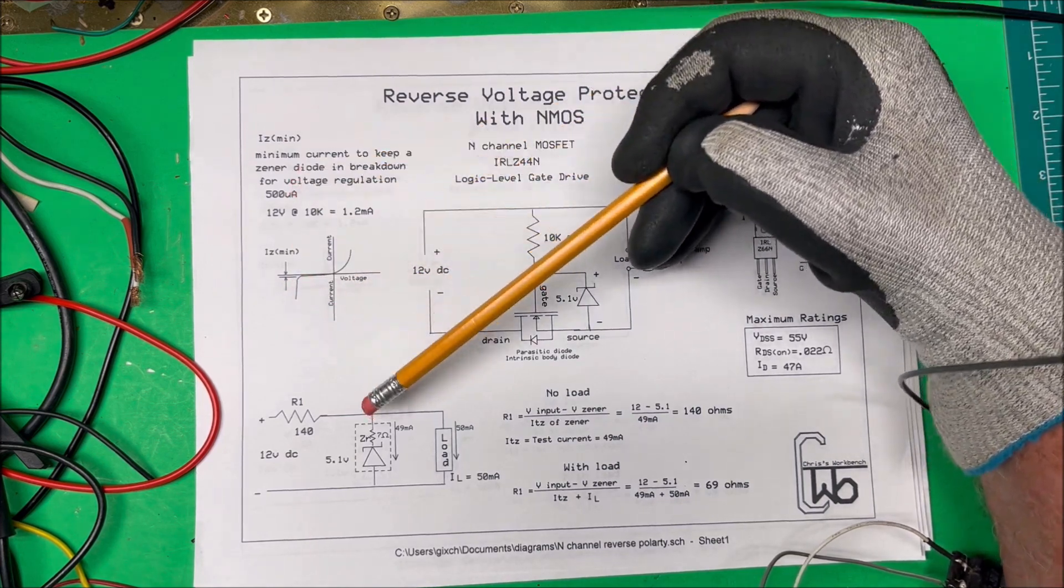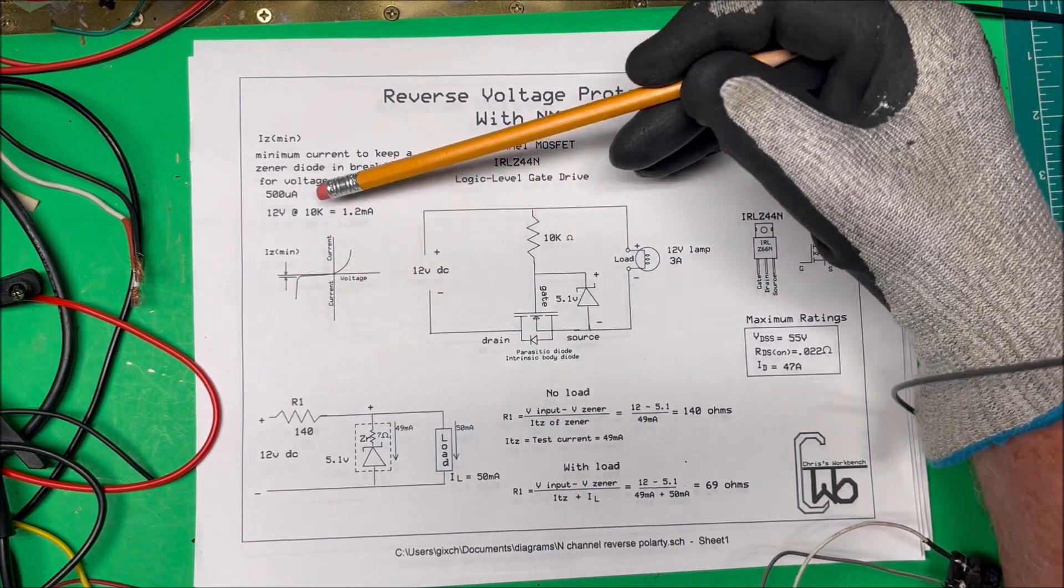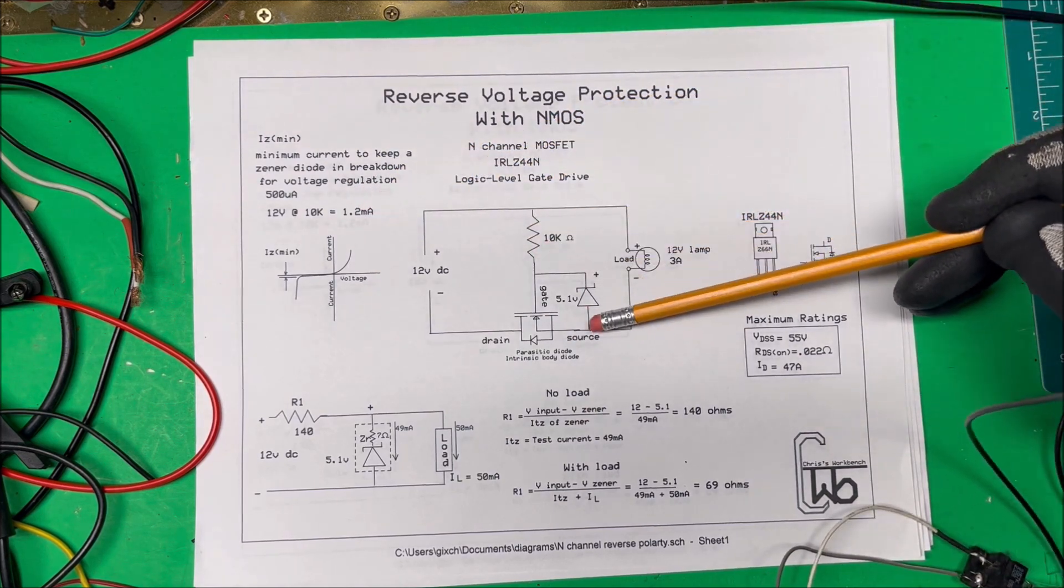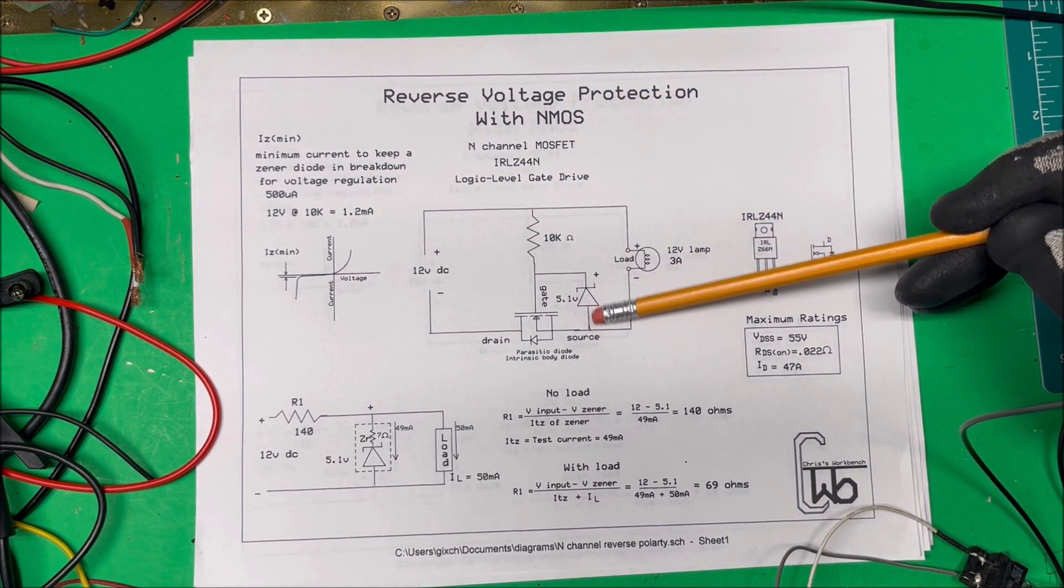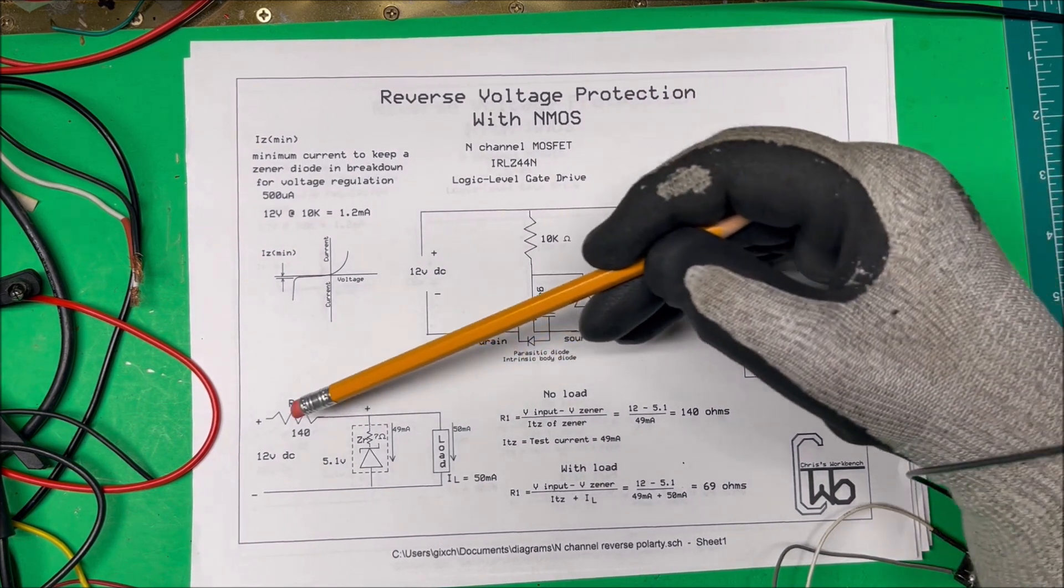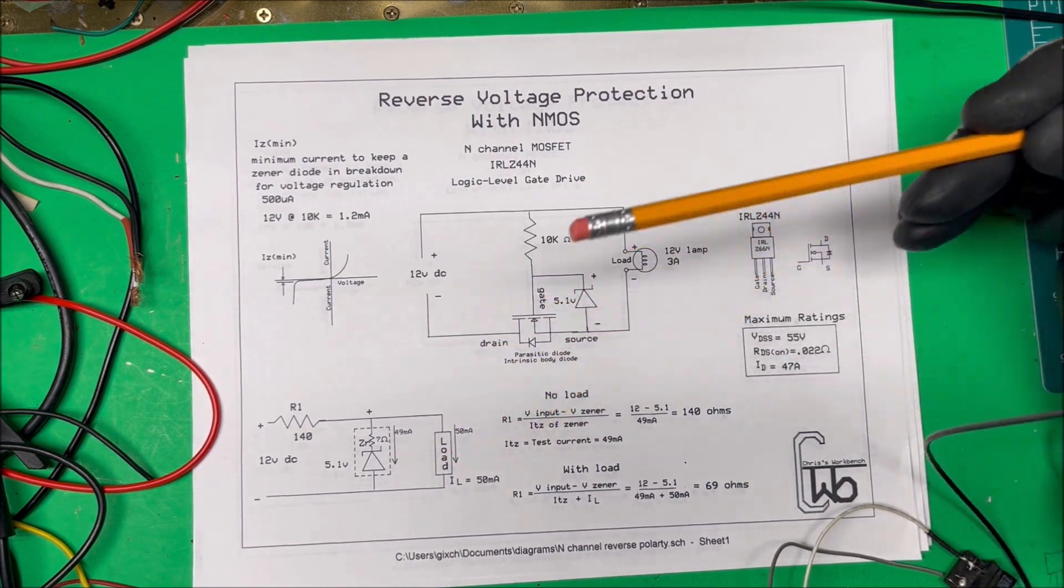And it needs to be at least a half a milliamp for that to be able to break down. And we're using 10k so at 12 volts 10k I'm going to have 1.2 milliamps running through the diode here so that's going to be fine, that's how we can get by with our 10k. Now if we use 10k over here and you put any kind of load over here at all it would just stop regulating.